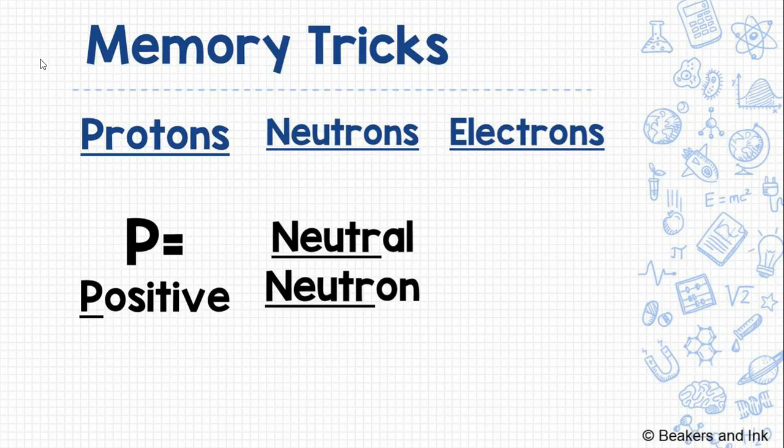Neutrons. We know neutrons have a neutral charge. If you look at the first five letters of each word, they're the same: N-E-U-T-R. Neutron, neutral. So you can remember that neutrons are neutral, which means they have no charge.